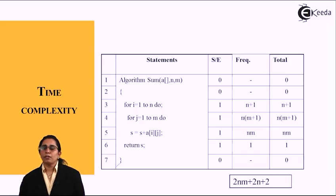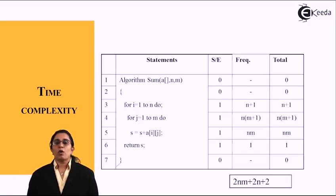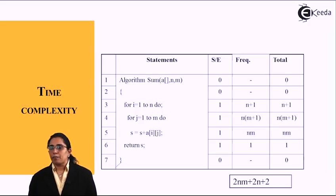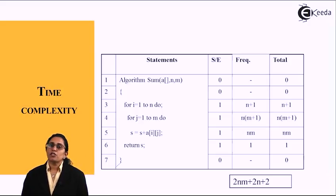For the second example, let's take a look. A small algorithm is given over here where it calculates the sum of the array. If we see, the first one is a function definition, so the execution and the frequency and the total amount of time complexity is 0.